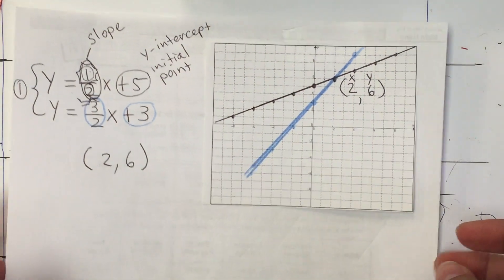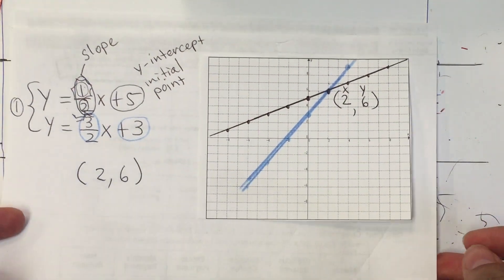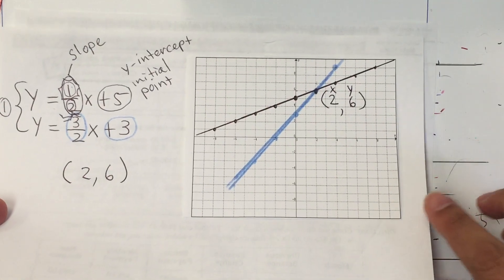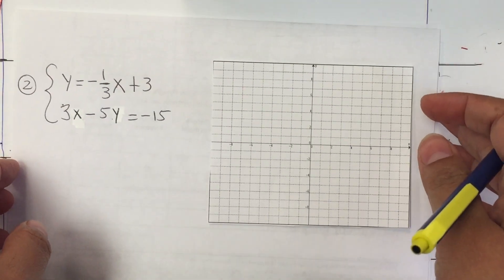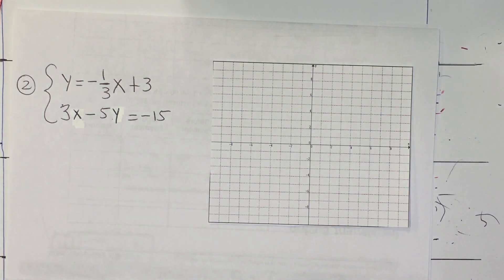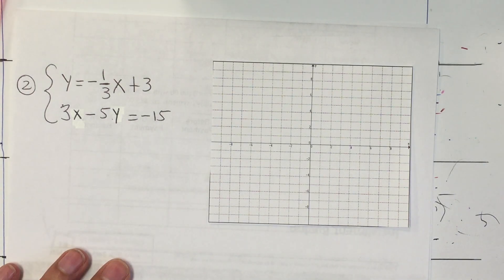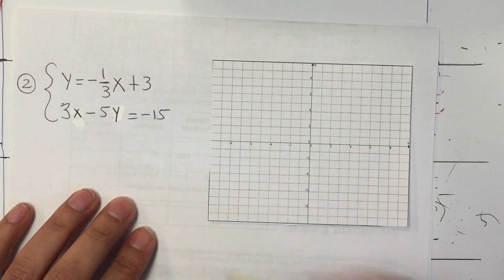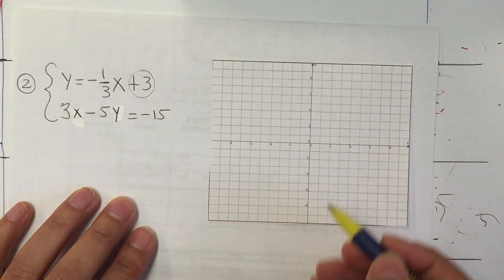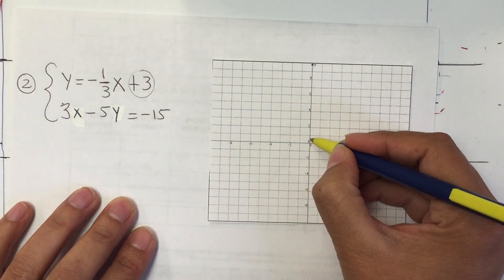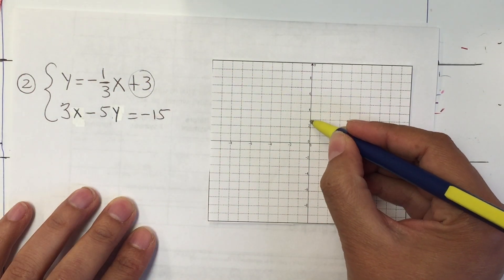Let's do another one. If you need to pause, go ahead and do that so that you can take notes. We have another one here, and my initial point is at 3 — 1, 2, 3 — that's my first point.